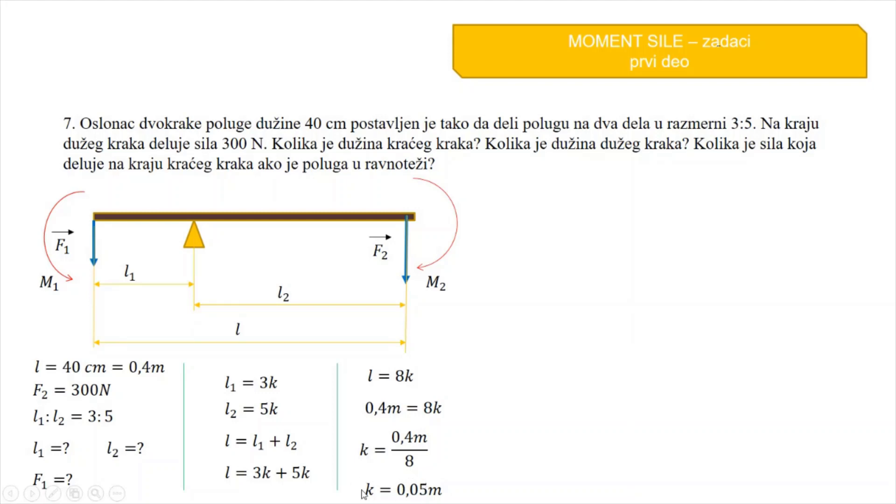Sada kada imam K, mogu da dobijem koliko je L1 i L2. L1 će biti 3 puta K, odnosno 3 puta 0.05 metara, to je jednako 0.15 metara. L2 će biti 5K, to je 5 puta 0.05 metara i to je jednako 0.25 metara. I sada možete uraditi proveru. Kada saberem L1 i L2, ja moram dobiti 0.4 metara, što i jeste iz ovog ovde.